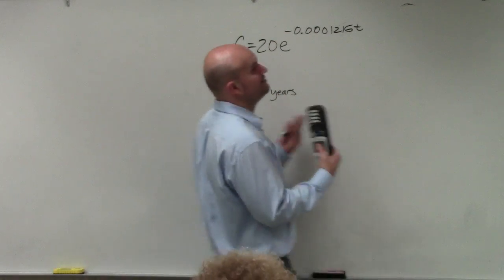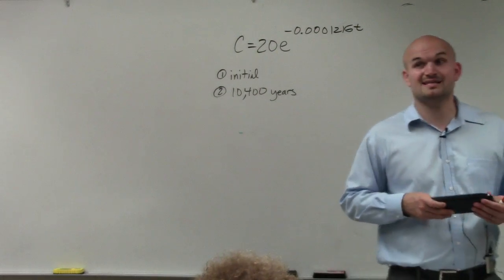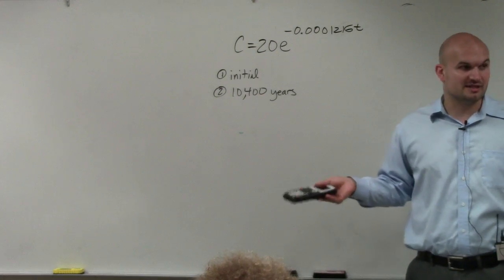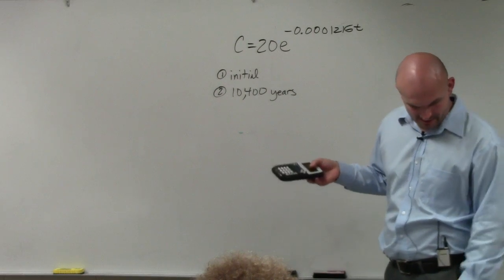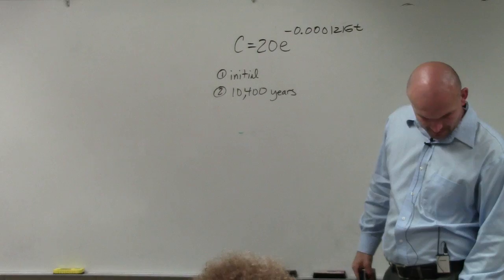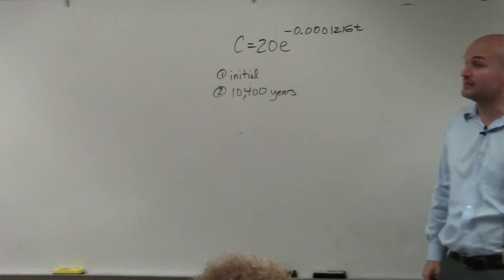So C represents the amount of carbon, and T represents the number of years. This is going to be the amount of carbon that is left in a substance. This is the equation that models how much carbon is going to be left within a substance after so many years.